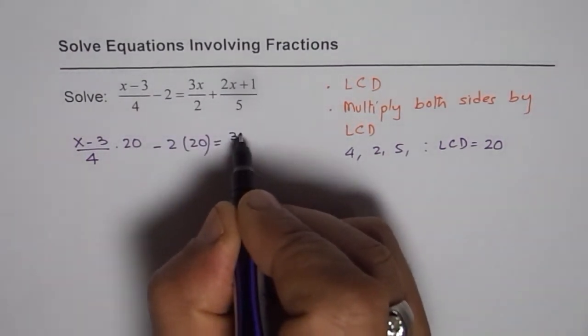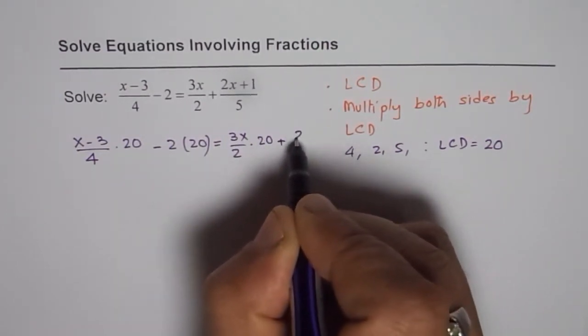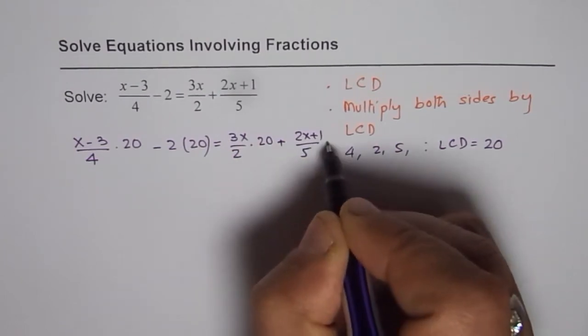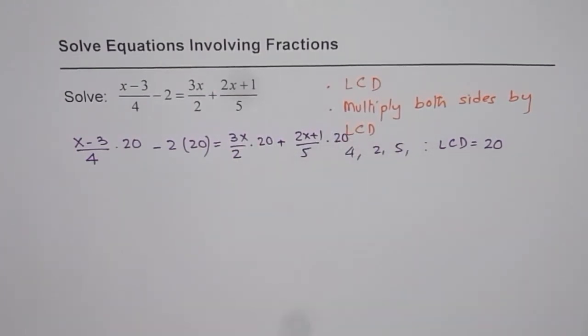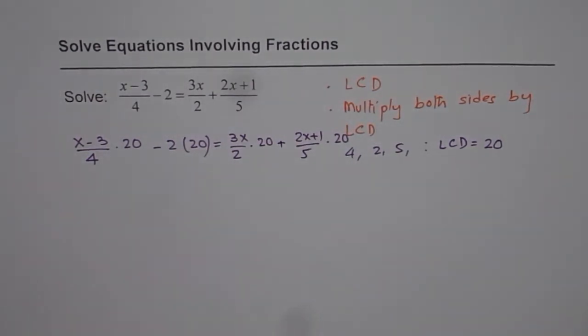Equals to we have 3x over 2, we have to multiply this by 20. Plus (2x plus 1) over 5, we have to multiply this by 20 also. So we have multiplied each term by 20.